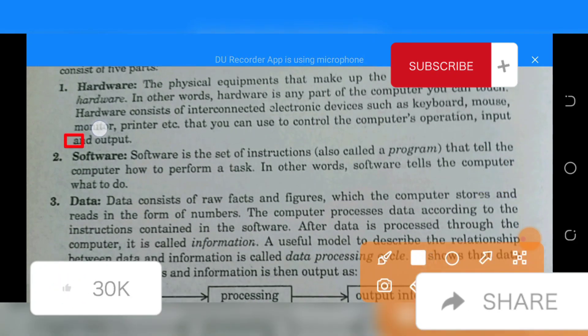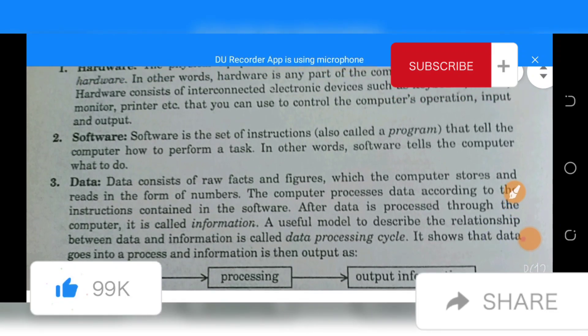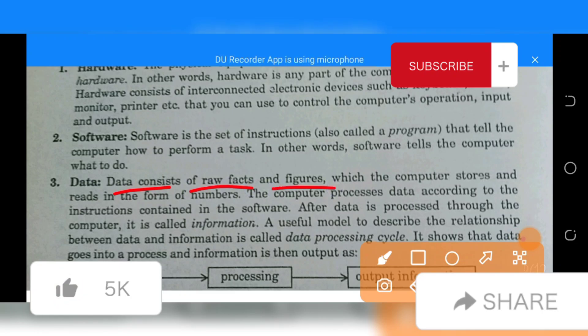Software is the set of instructions, also called a program, that tells the computer how to perform a task. In other words, software tells the computer what to do.